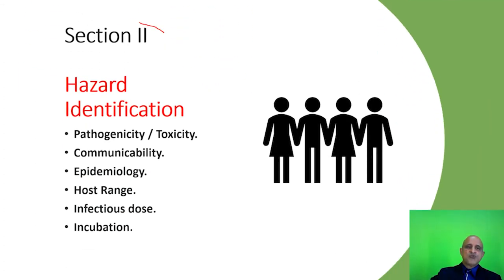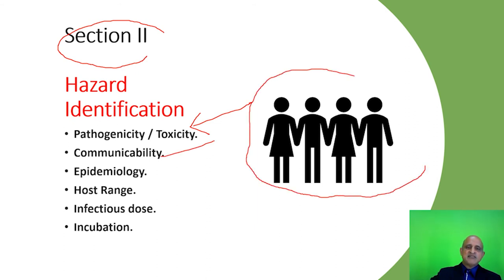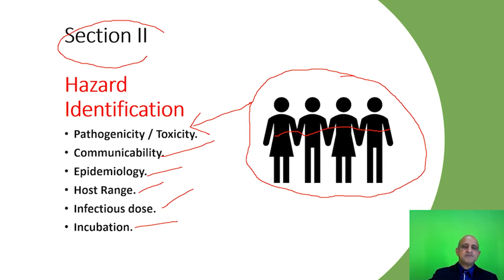Section 2 focuses on hazard identification. In this section, the pathogenicity and toxicity are addressed, along with communicability — the ability of the biological agent to be transmitted across the community — the epidemiology, the host range, the infectious dose, and the incubation period. The incubation period is the duration between the exposure to the biological agent and the manifestation of symptoms.